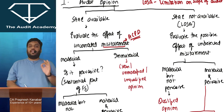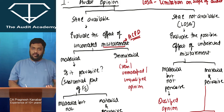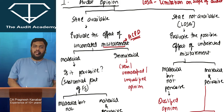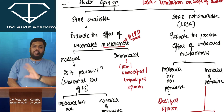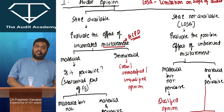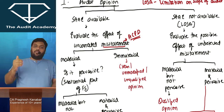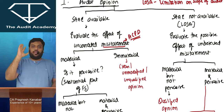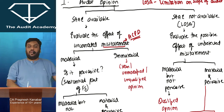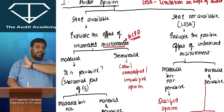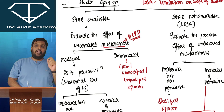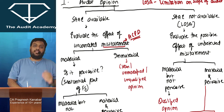As a CA Final student, you've heard of qualified opinion, adverse opinion, and disclaimer of opinion. Qualified opinion means financial statements show a true and fair view except for the following — largely true and fair but with some reservations. Adverse opinion means financial statements do not show a true and fair view. Disclaimer of opinion means we are unable to form an opinion. These three are called modified opinions, covered in SA 705.